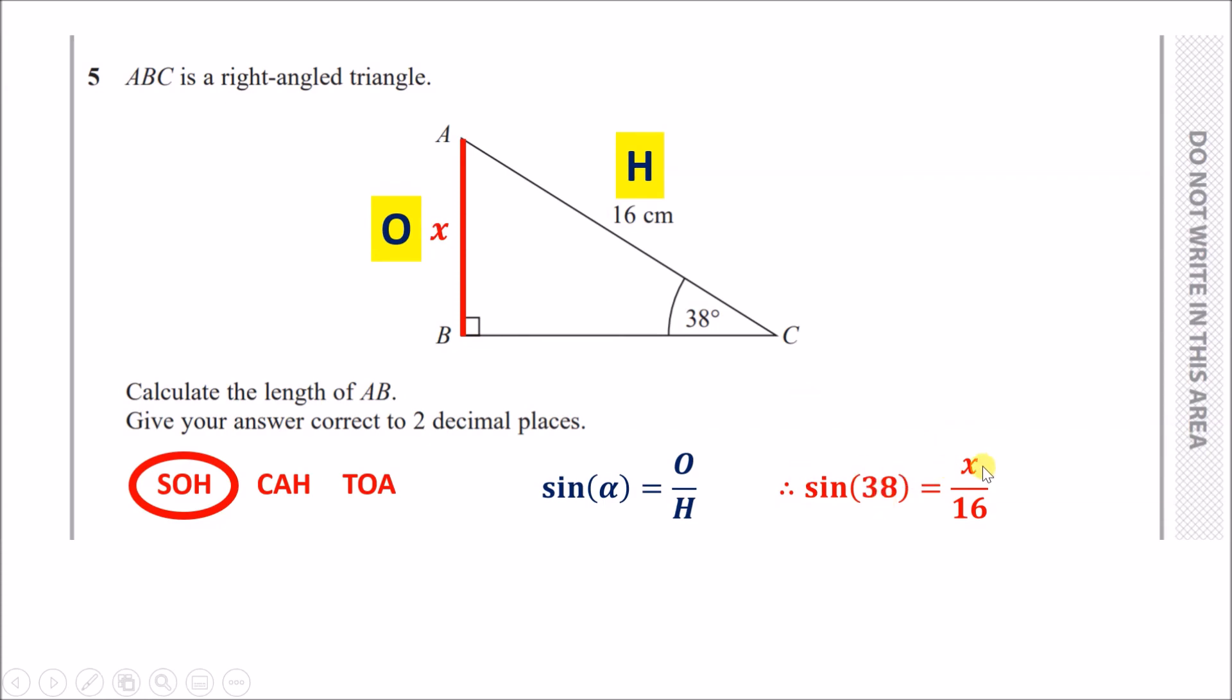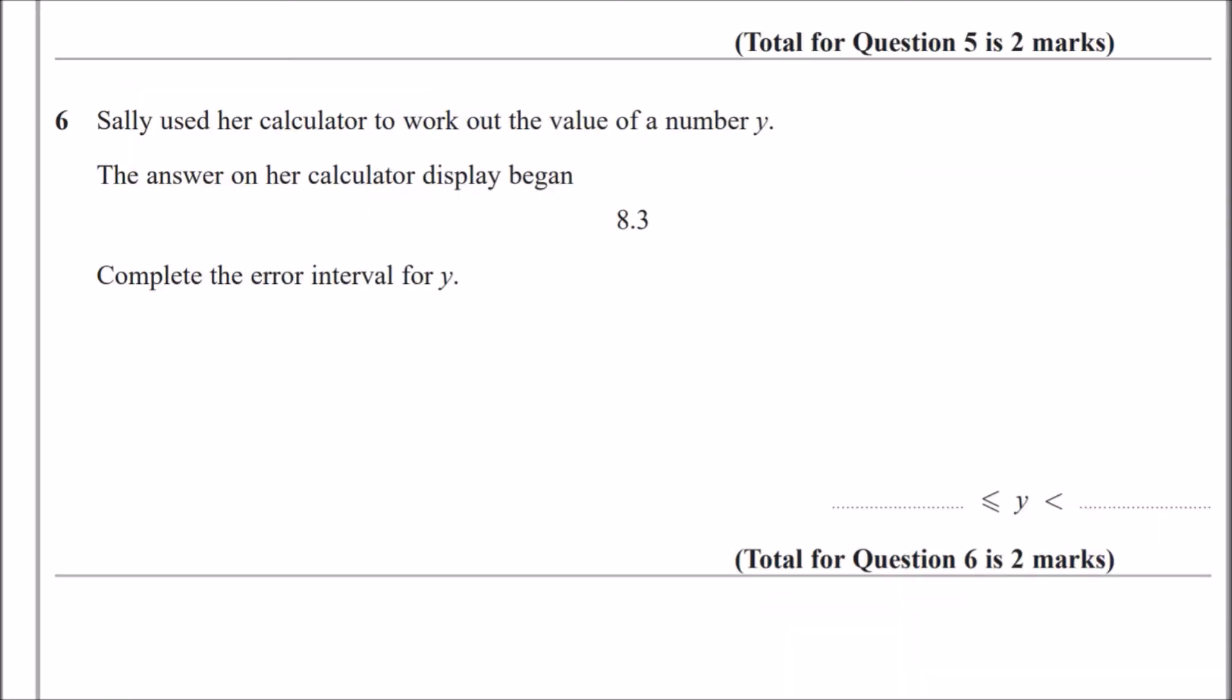We're trying to find x, so rearrange and make x the subject. Clear the fraction by multiplying 16 across. Punch this in your calculator and you get an answer to 2 decimal places equal to 9.85 centimeters. We are done.